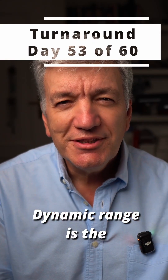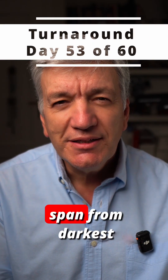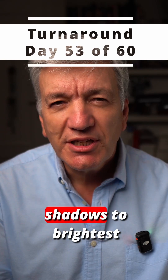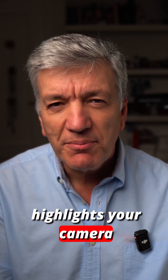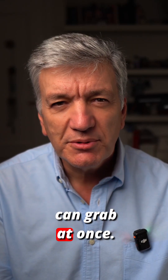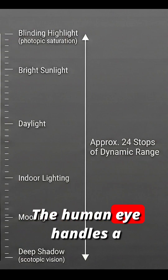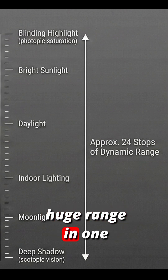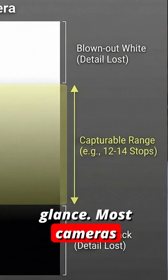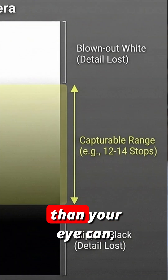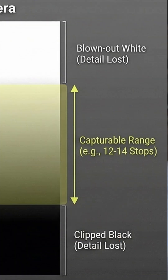Dynamic range is the span from darkest shadows to brightest highlights your camera can grab at once. The human eye handles a huge range in one glance, but cameras capture less than your eye can, leading to lost details.